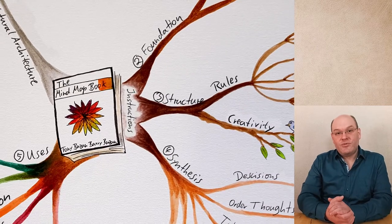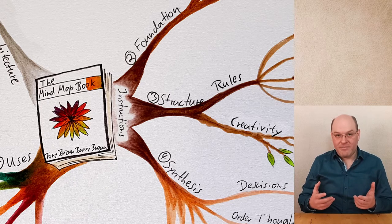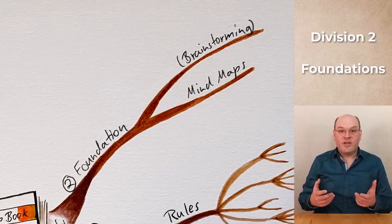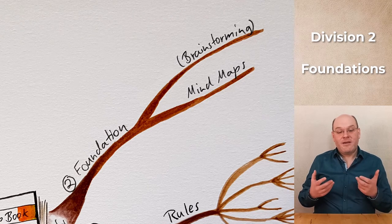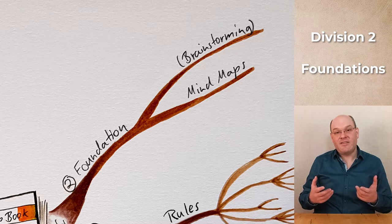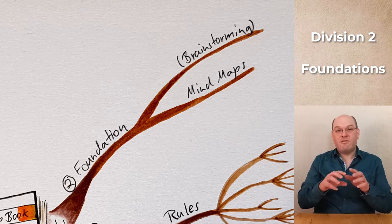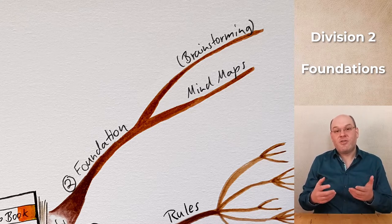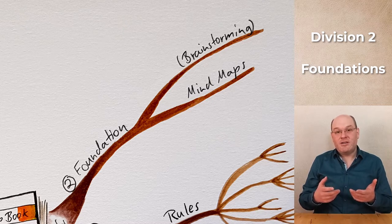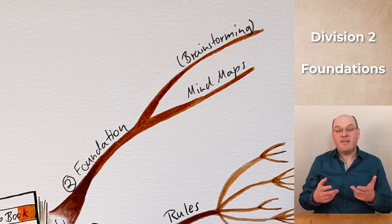Divisions 2 to 4 are pretty much practical instructions about how to use mindmaps. In Division 2 we get some foundations and get started. We begin by doing small brainstorming exercises where we take a basic term and create associations around it, forming a very simple preliminary mindmap. We do this once with words, once with images, and then move on to very simple basic mindmaps.